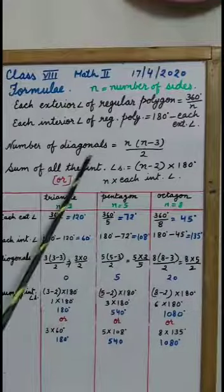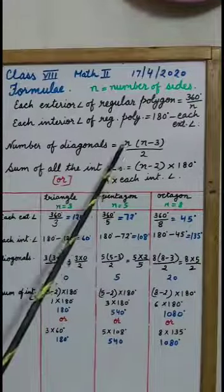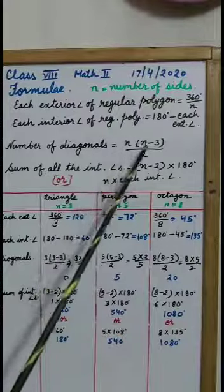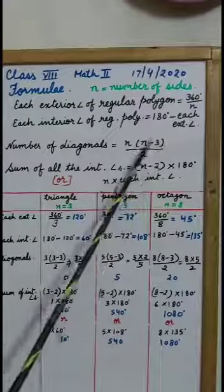Number of diagonals. Number of diagonals we can find by multiplying number of sides by n minus 3 upon 2.